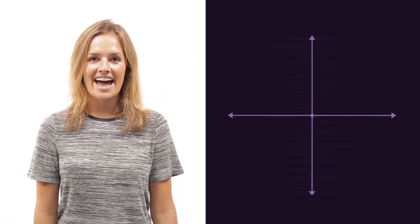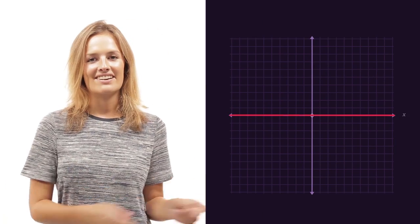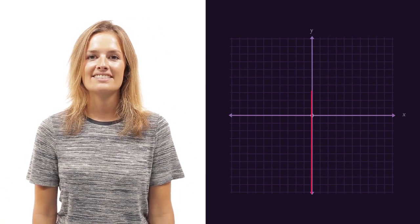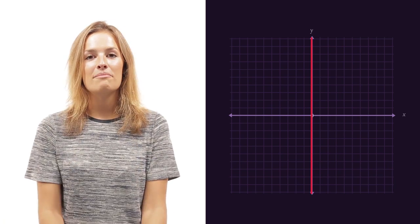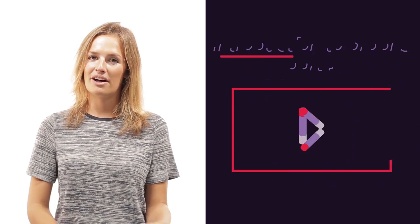You should already know that the x-axis goes in this direction and the y-axis goes in this direction. But if you've forgotten, watch part one first. In this video, we're going to look at the equation of horizontal and vertical lines.